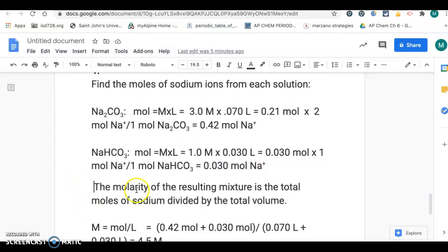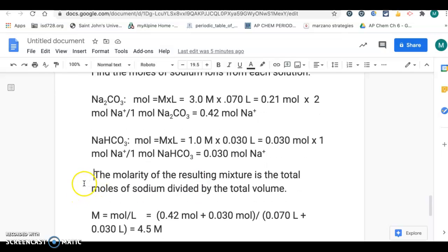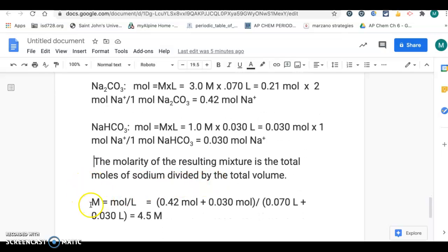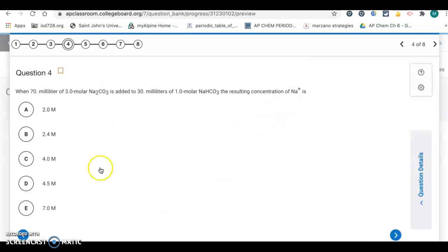So, then the molarity of the resulting mixture is the total moles of sodium divided by the total volume. So, molarity is moles divided by liters. So, here we add together the moles of sodium ions, and you divide by the total volume. So, it ends up being 0.45 divided by 0.10, and we end up with 4.5 molar. So, then we go back. That's going to be letter D is our answer.